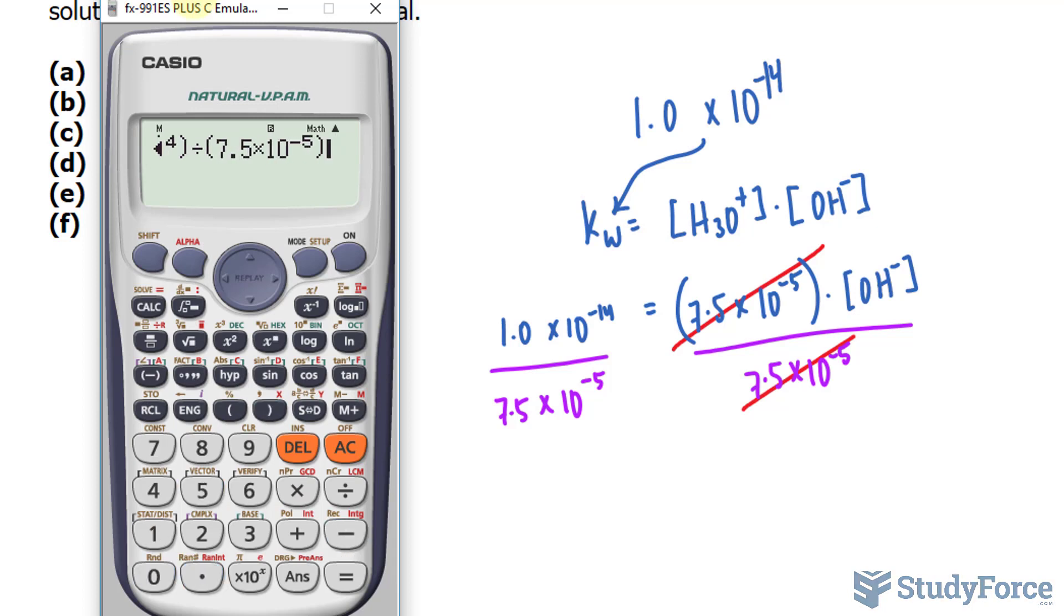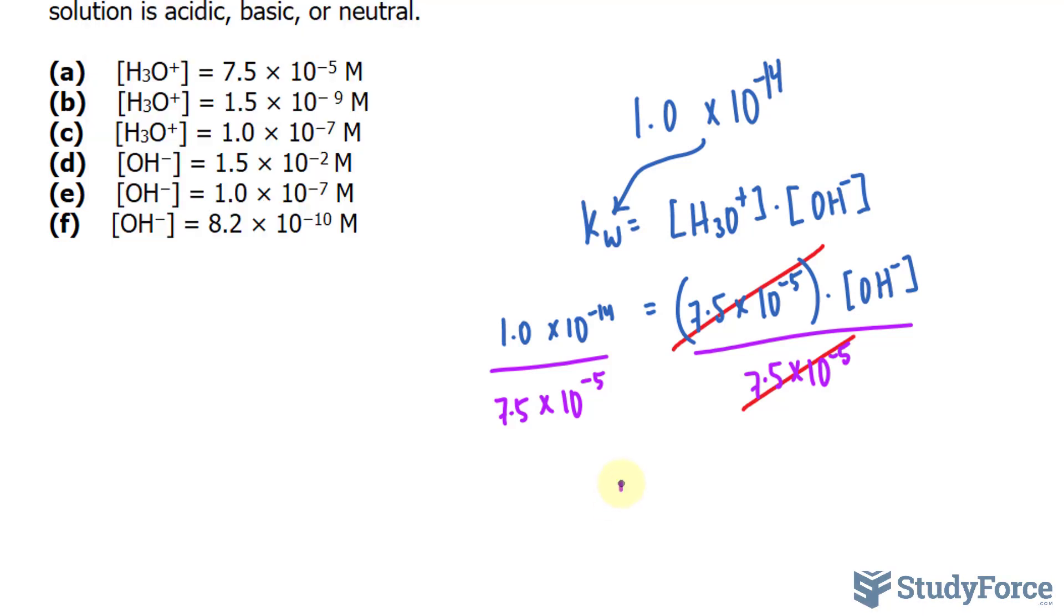And this gives us two significant figures, 1.3 times 10 to the power of negative 10 in molars. So let's compare 7.5 times 10 to the power of negative 5 to this number. Obviously, this number is greater than that.